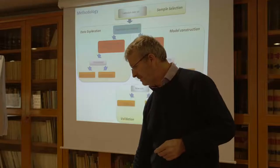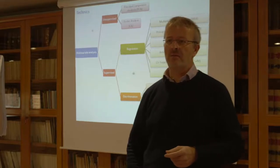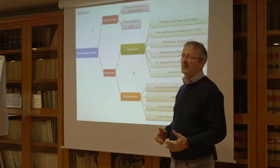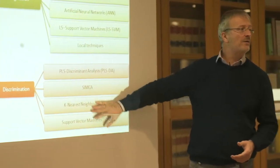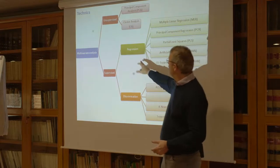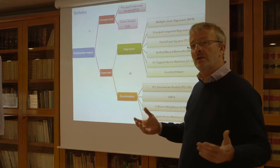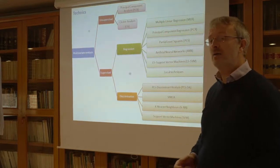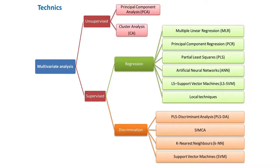Regarding which model is best: there is no simple answer. You need to test many models. For discrimination tasks you use classification-type techniques; for quantification you use regression-type techniques. But which specific model within those categories is best depends on what you want to predict — there is no universal answer. That is exactly our job: finding the best prediction approach for each parameter.